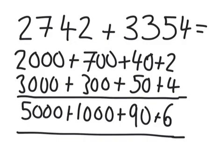So adding that all up, we've got 5,000, then 6,000, 6,090, 6,096. So that's 6,096.